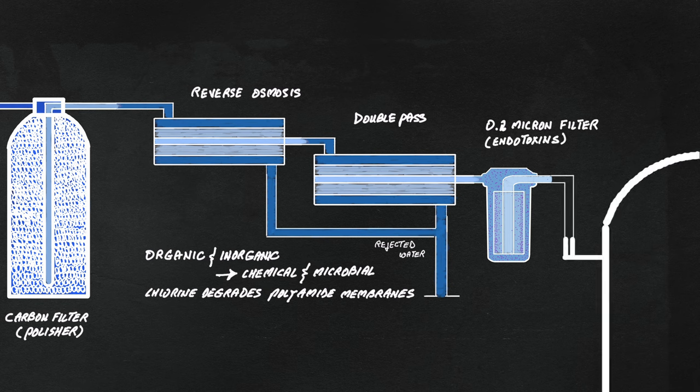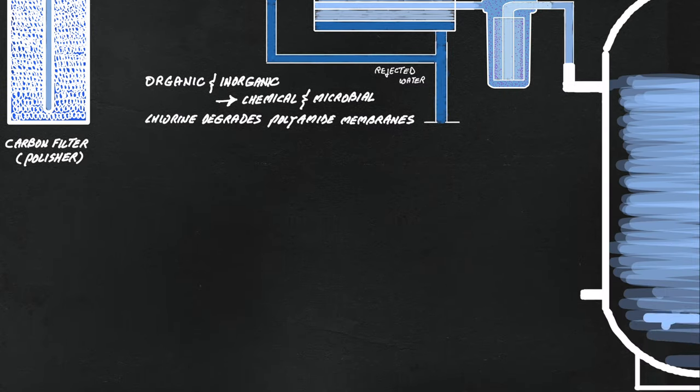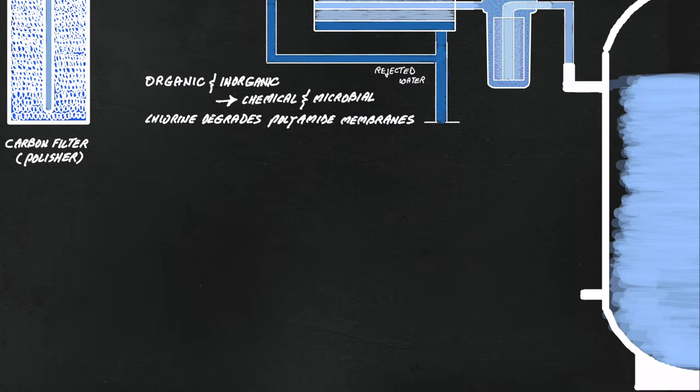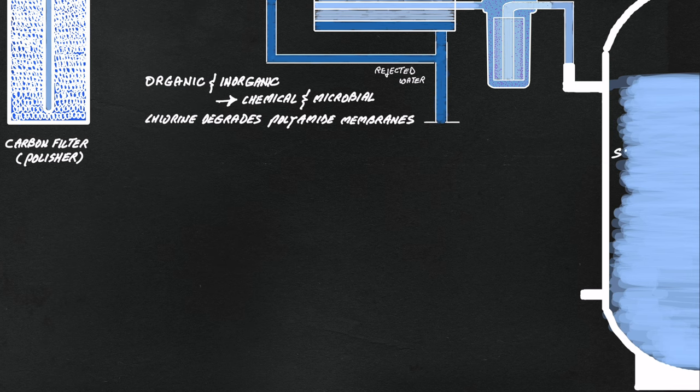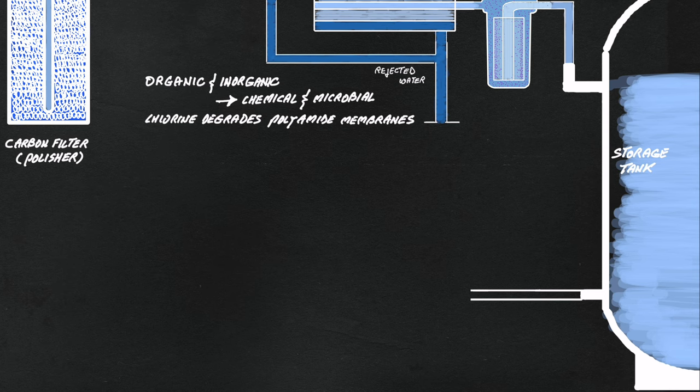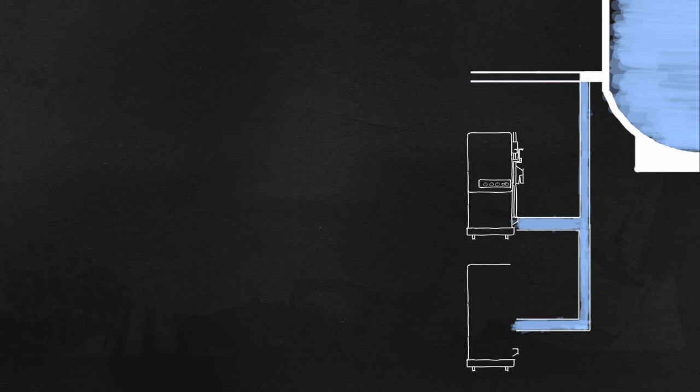The last step in water preparation, following purification, is water distribution. Here we have indirect water distribution system, where water is collected in a specially designed holding tank, which communicates with the RO system to avoid overflow. Purified water then is pumped to individual dialysis stations, where online, on-demand dialysate production takes place at time of treatment.